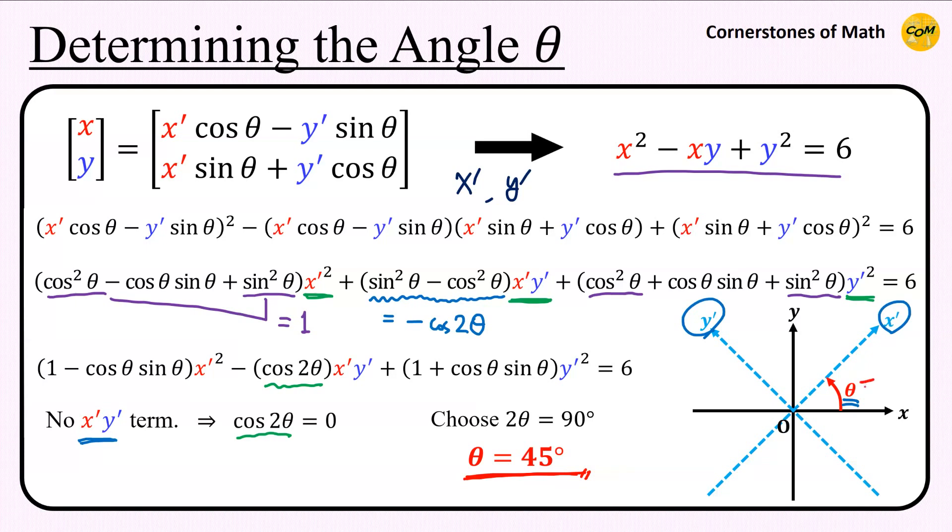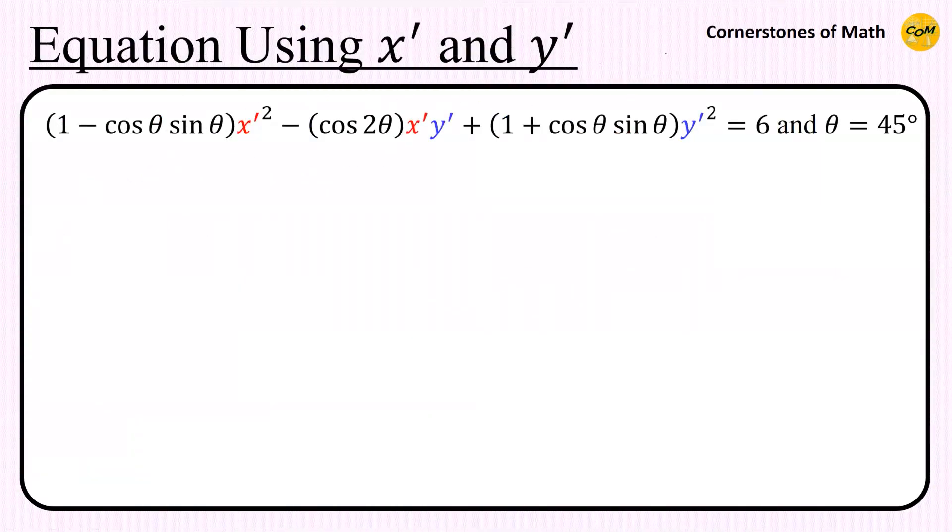That is, if we rotate the axis by 45 degrees, then we obtain the equation without x, y term. So from here, if we let theta be 45 degrees, then we have this. Notice that x prime y prime term is now gone.